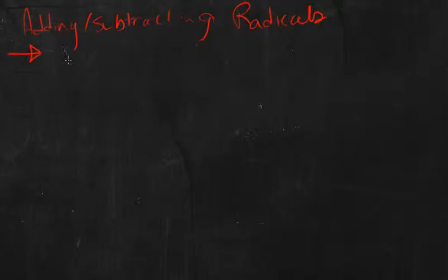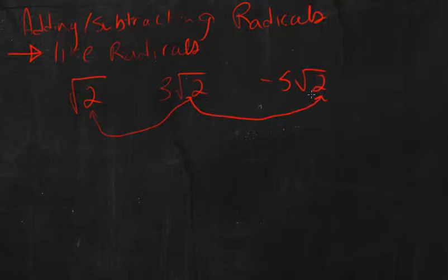First thing we need to know when we're adding or subtracting radicals is we need like radicals. What I mean by like radicals is that we need the same thing underneath the root sign, what we call the radicand. So if I look at this, root 2, 3 root 2, negative 5 root 2, so these all have to be root 2 underneath the radical sign. If I have something different underneath the radical sign, I cannot put it together. I cannot add it or subtract it.